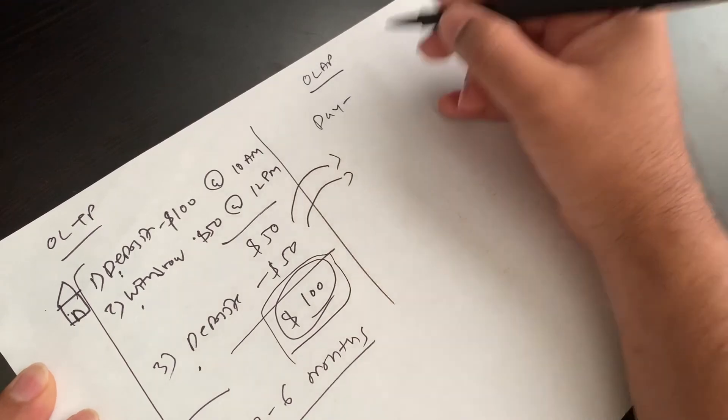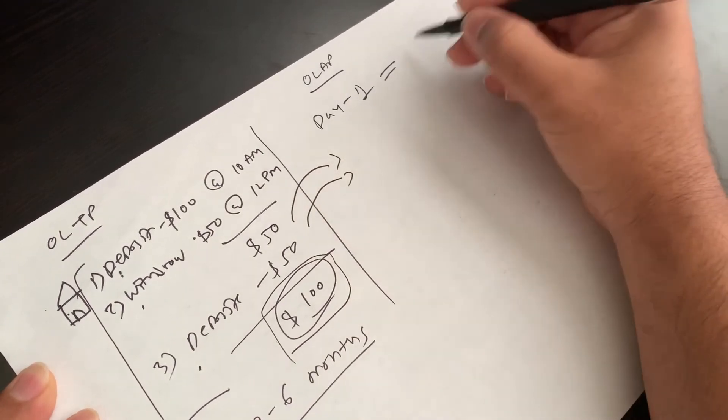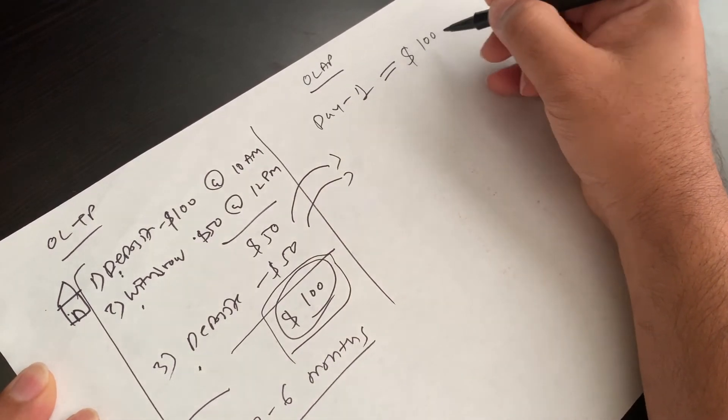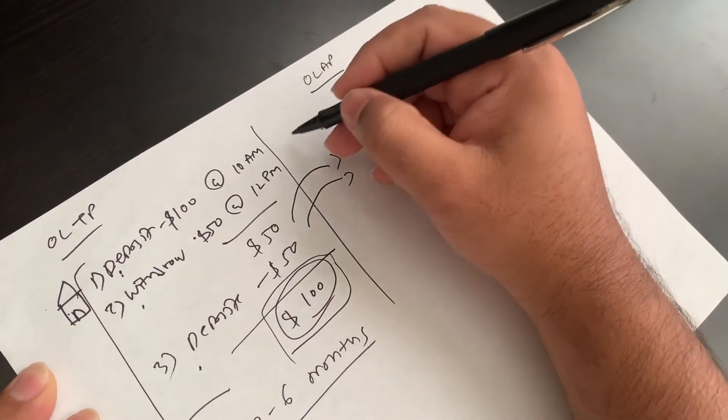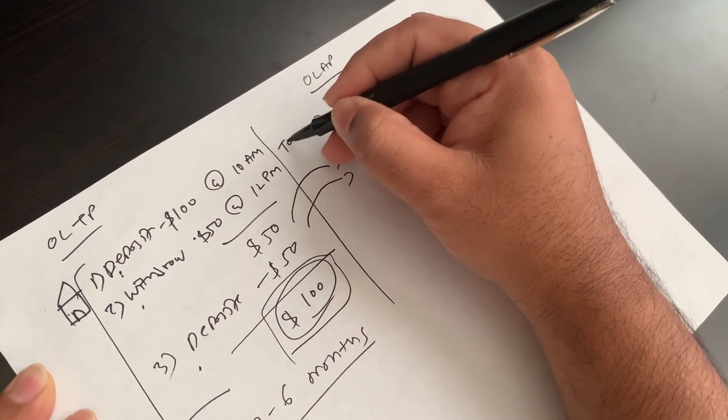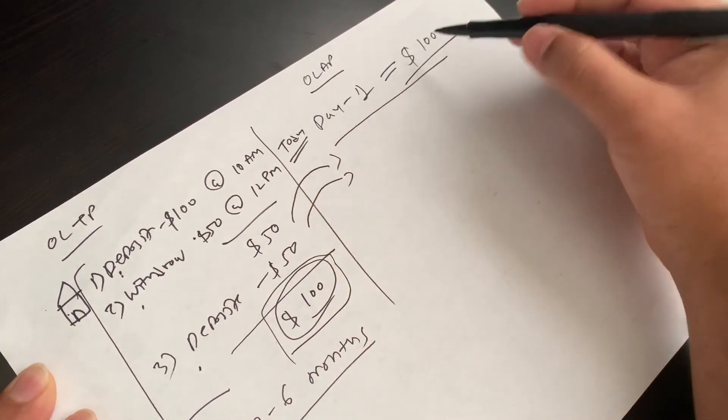So day one, for example, your total balance was $100. That's it. They will keep today's date and day one, this is the transaction.